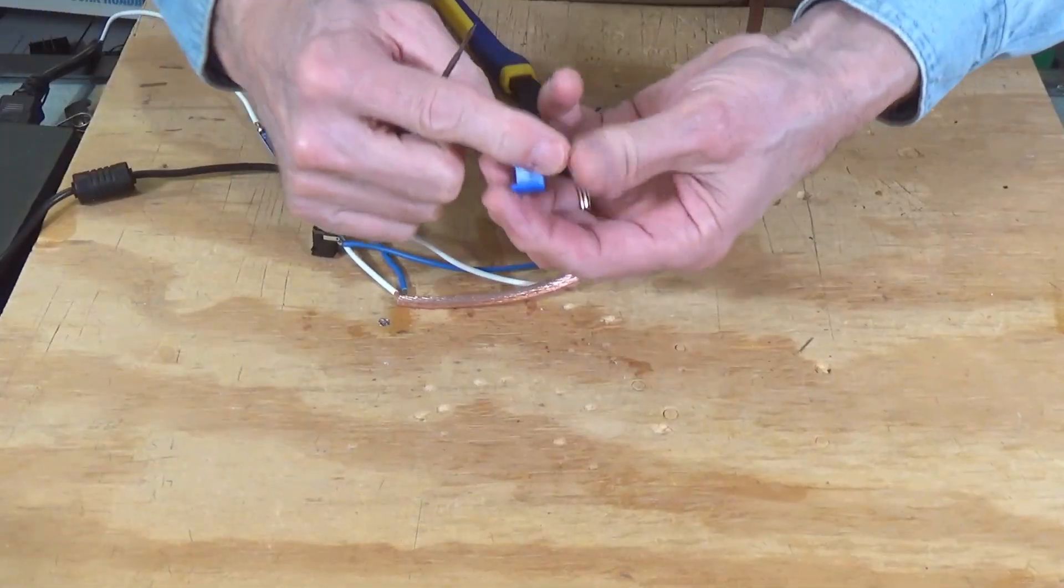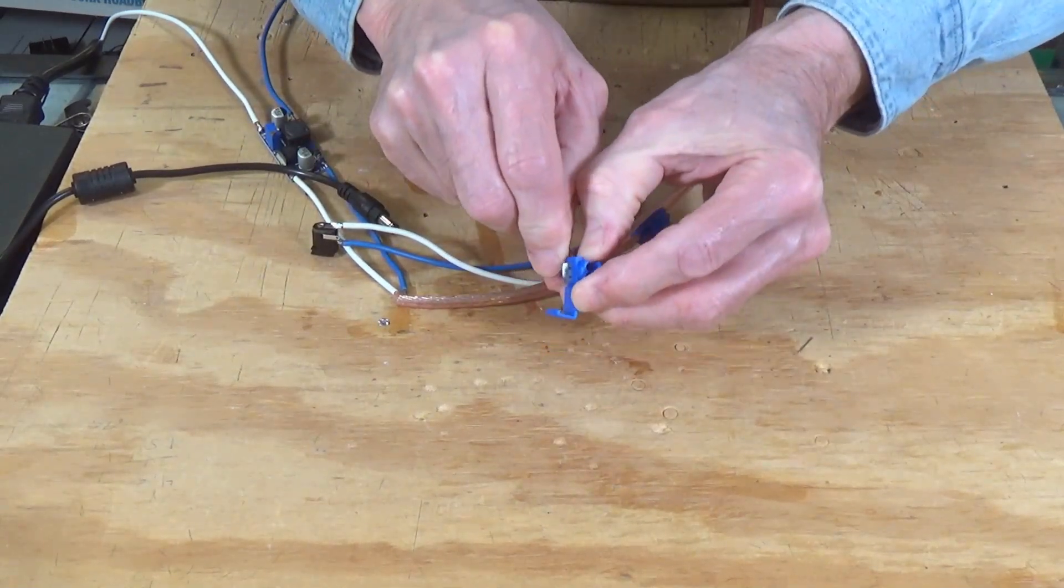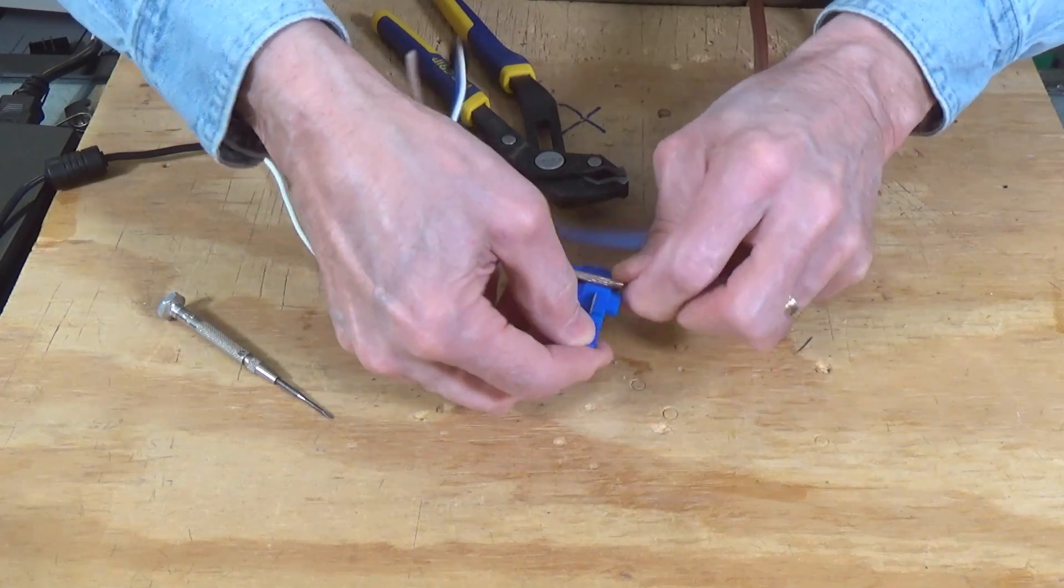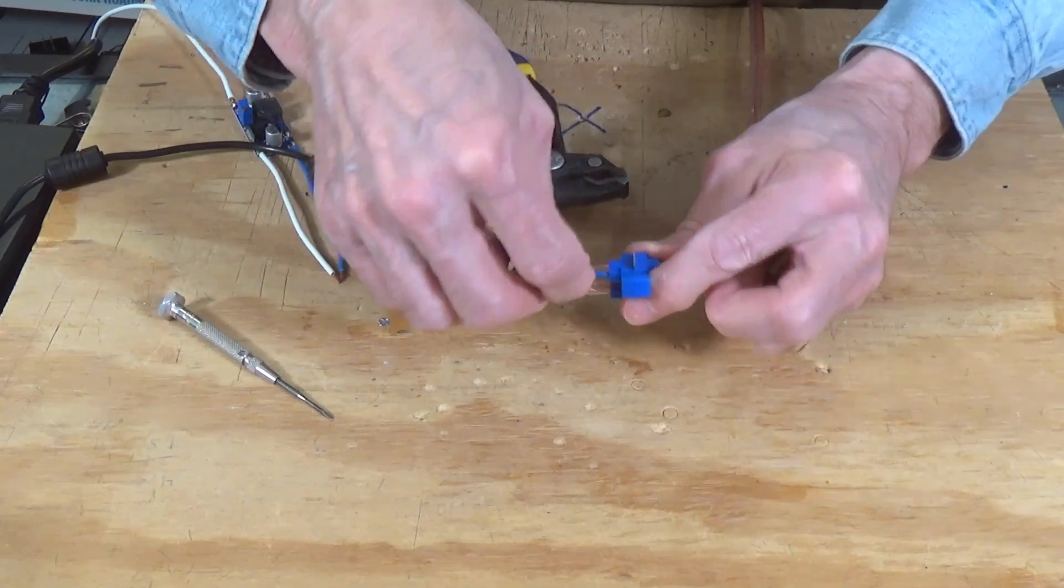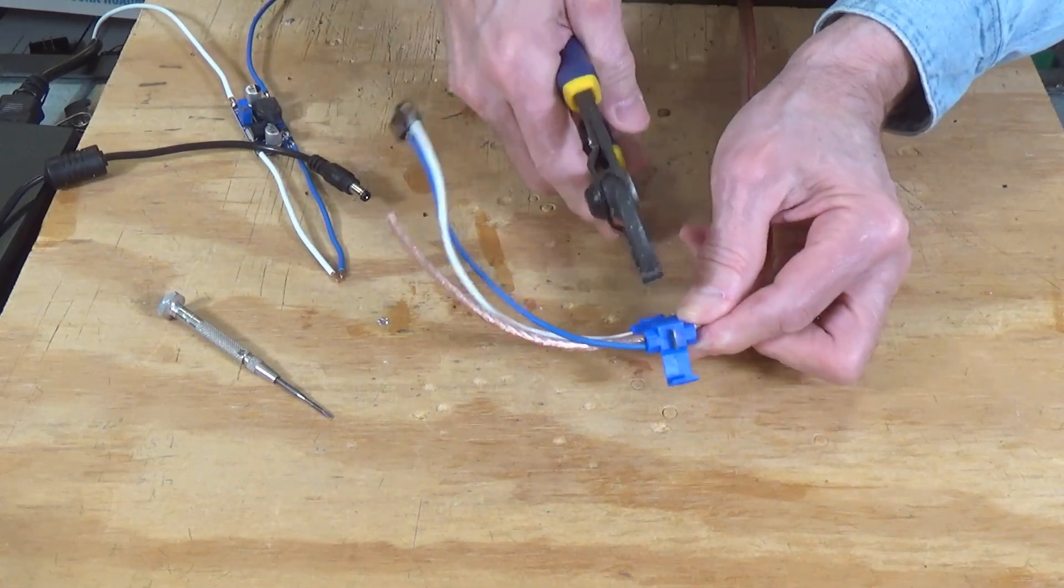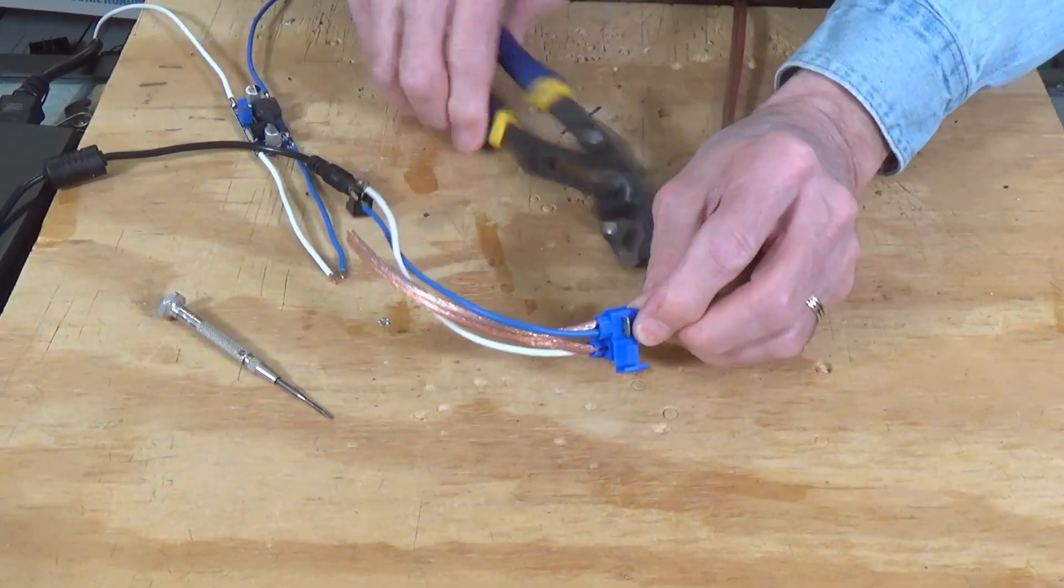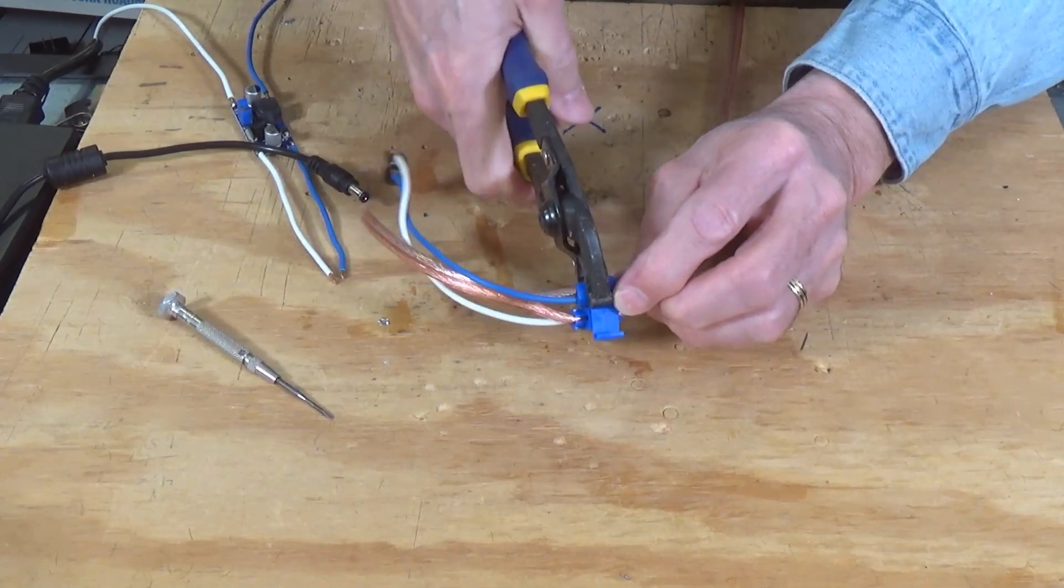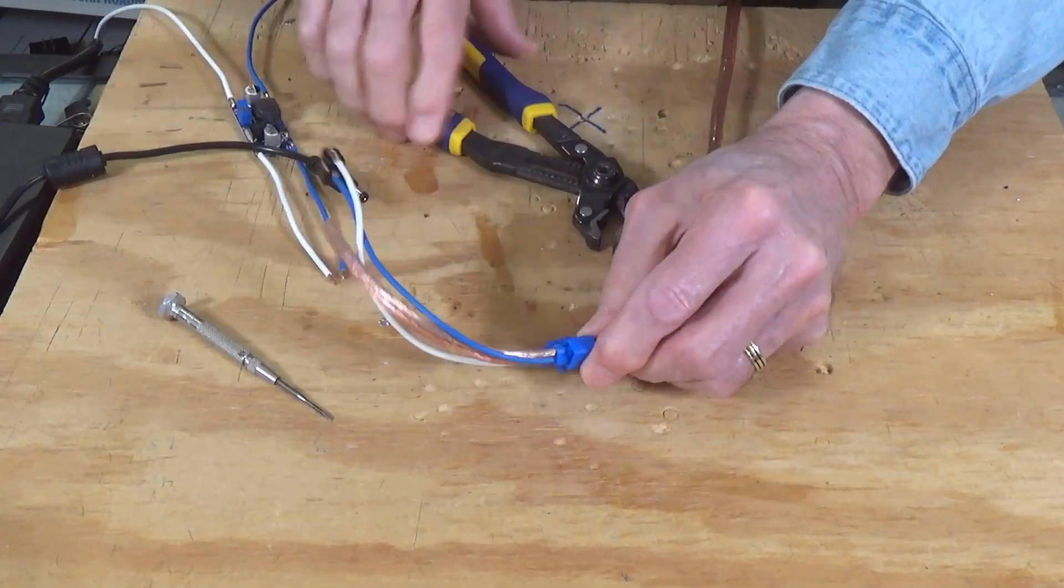Now let's do the other side. Right here, I've got one already, and we can just open that up a little bit to make it easy to fit over the wire. Slide that on, push it into place, and crimp it. And it's all done without any soldering at all.